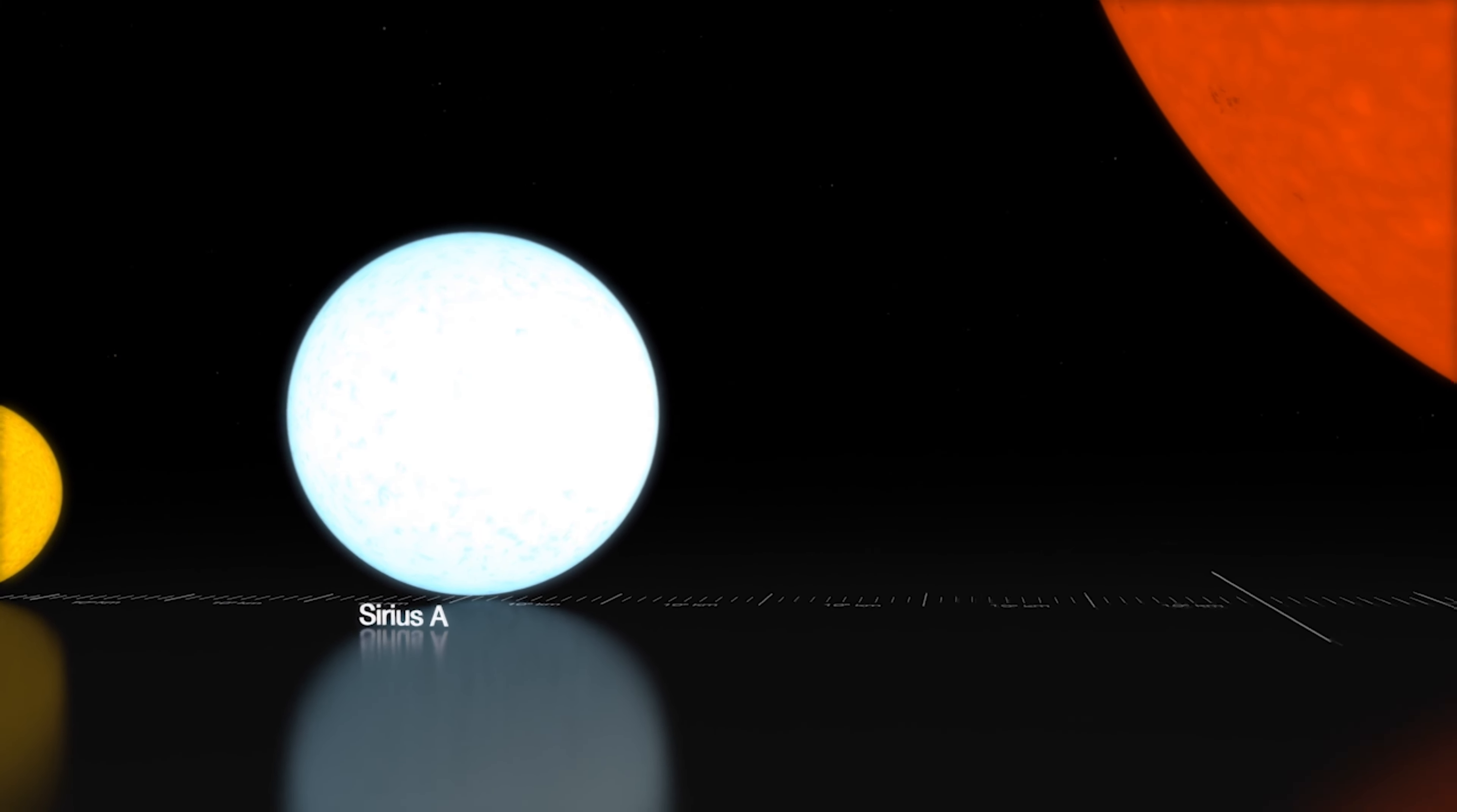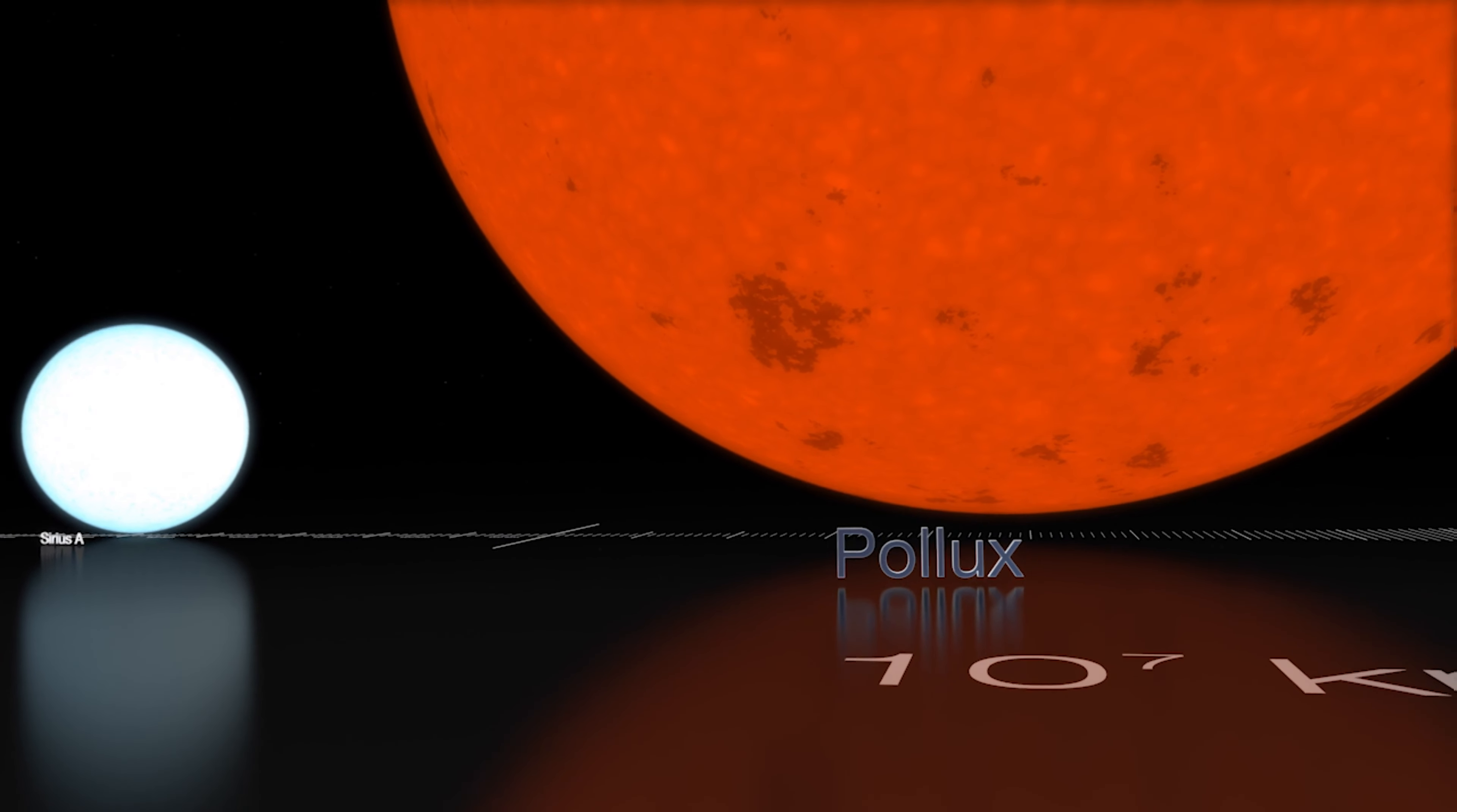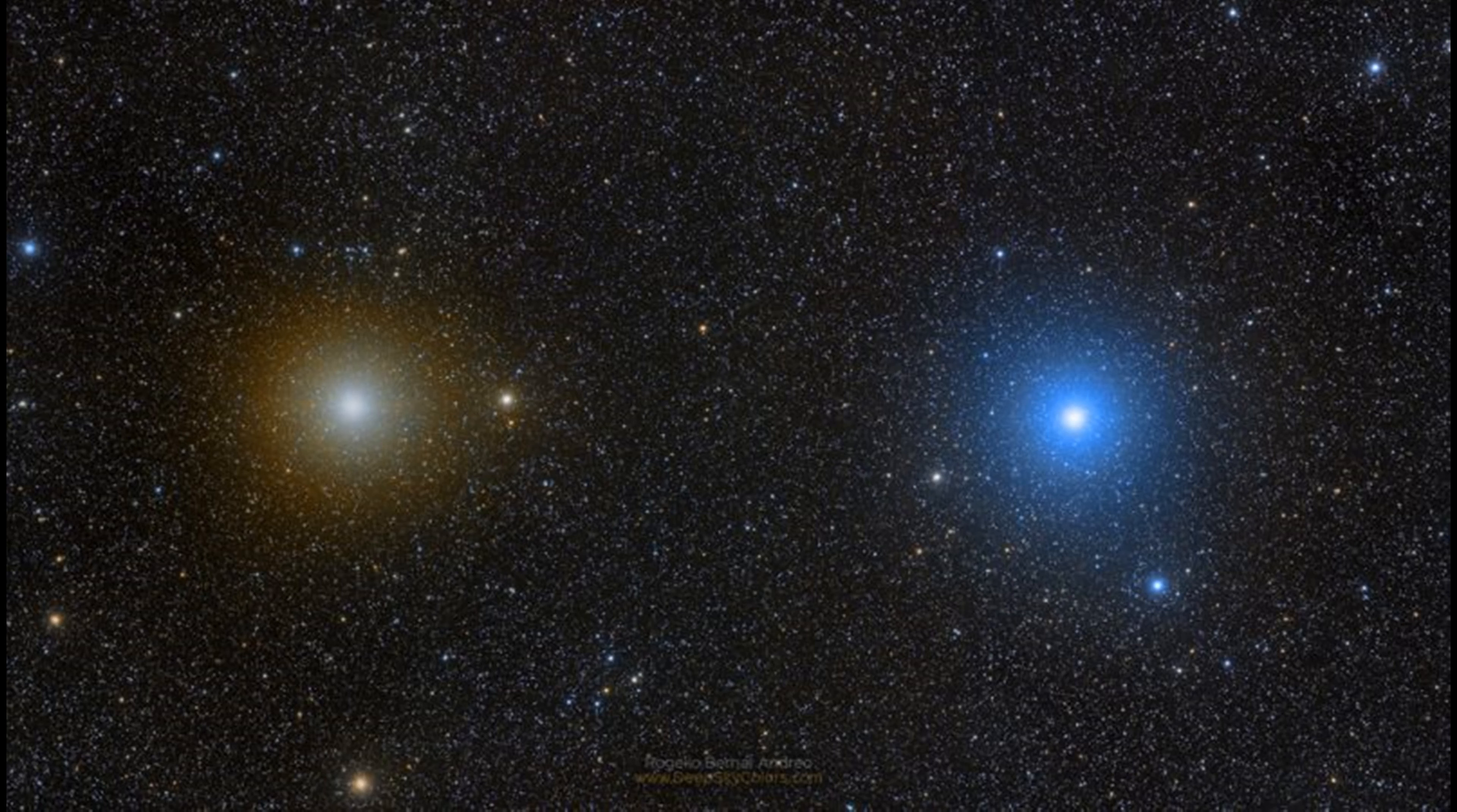Pollux is just under two times the mass of our Sun. It's almost nine times the diameter of our Sun and it's about 30 times the Sun's brightness in visible light. Pollux also pumps out a good bit of energy in non-visible infrared radiation.